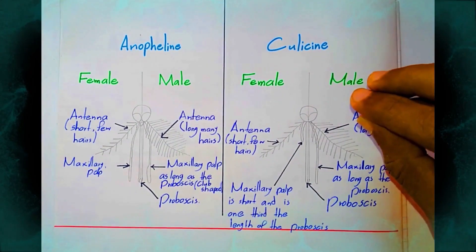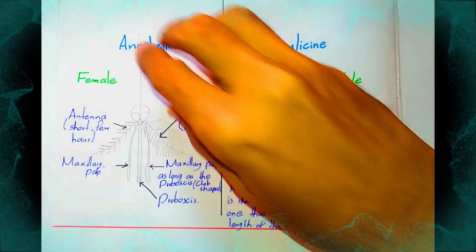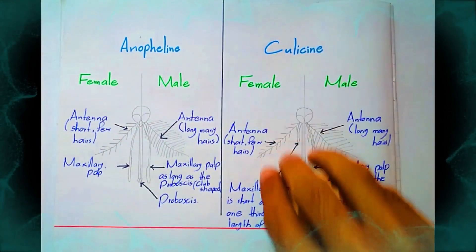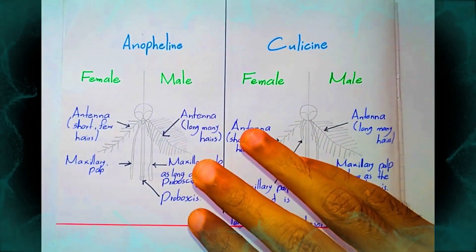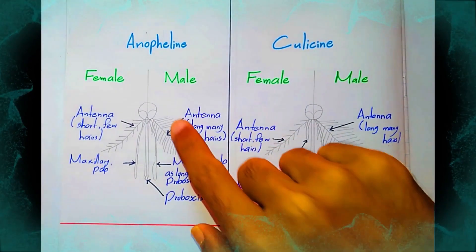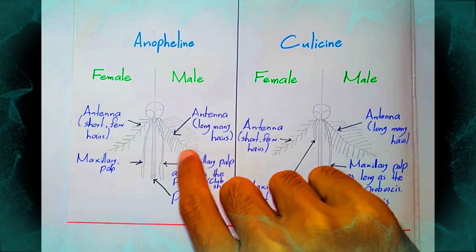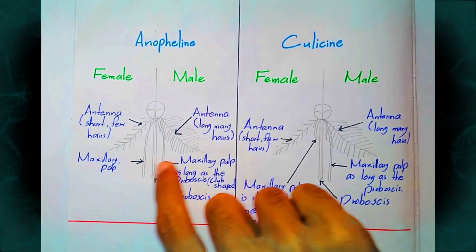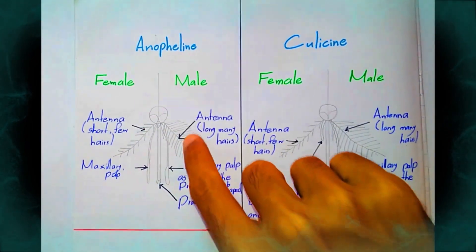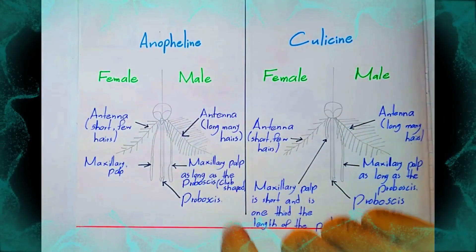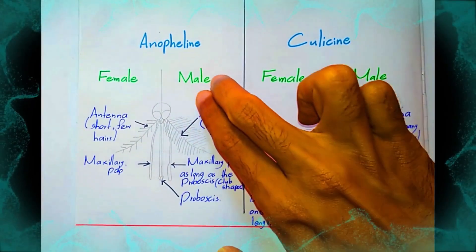This is anopheline and culicine mosquito mouthparts. This is anopheline female and male; this is culicine female and male. The mouthparts include the proboscis, the maxillary palps — there are two maxillary palps — and the antenna, there are two antennae.